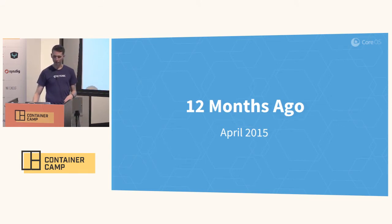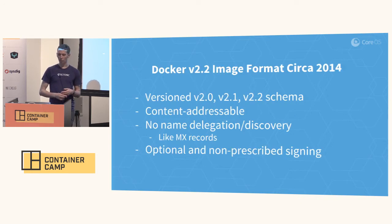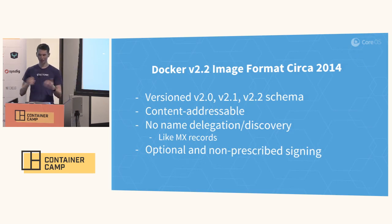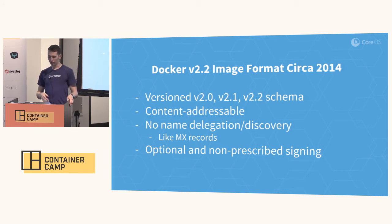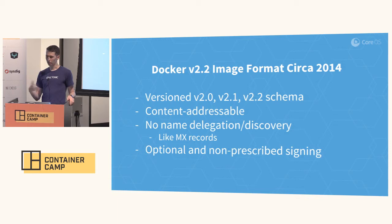12 months ago, a bunch of folks inside the Docker community worked on a new image format called the Docker v2.2 format. And this fixed a bunch of things. One is that it was content-addressable, much stricter about versioning, so there's less fluidity, which is great. It makes it much easier to implement registries and such. It didn't tackle the concern that we had around name delegation, and it had optional but non-prescribed signing, which is fantastic — we have this content-addressability property.